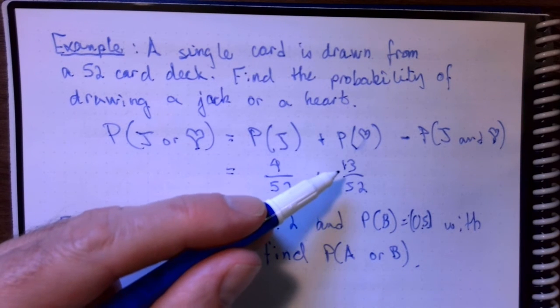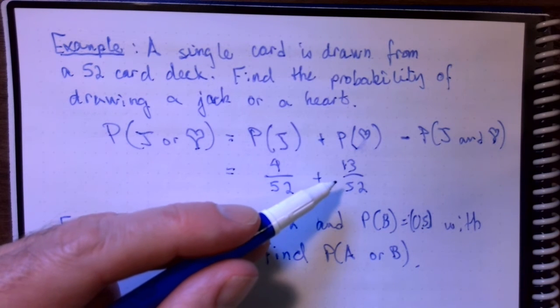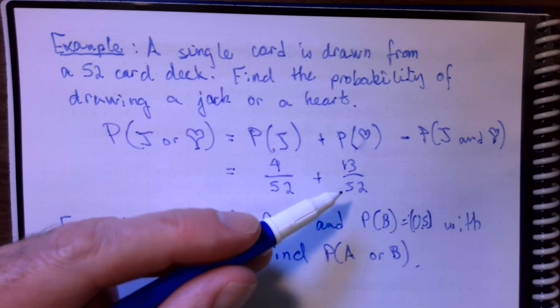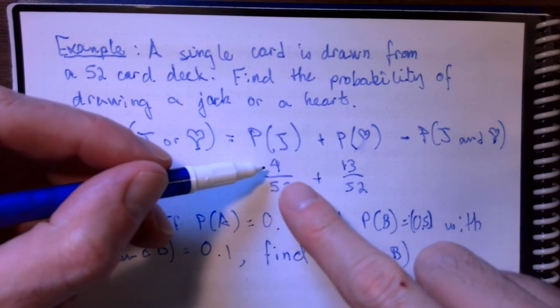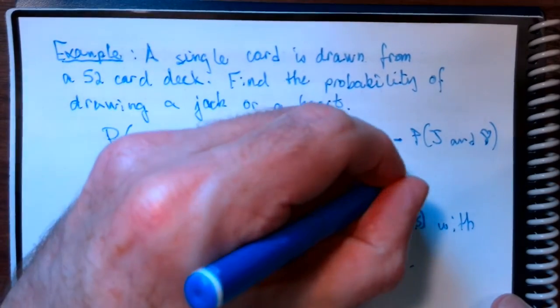When I look at the probability of getting a jack and say that it is 4 out of 52, I am counting the jack of spades, the jack of clubs, the jack of diamonds, and the jack of hearts. When I say there are 13 hearts in the deck out of 52 cards, I'm counting the ace, 2, 3, 4, 5, 6, 7, 8, 9, 10, jack, king, and queen of hearts. The jack of hearts got counted here, and it also got counted here, and that's why we have to do this subtraction.